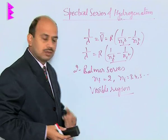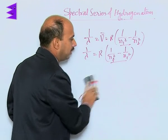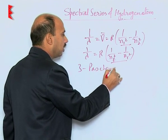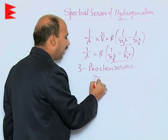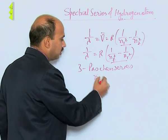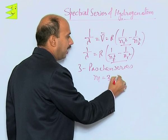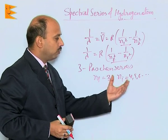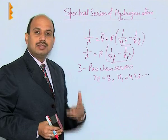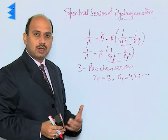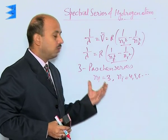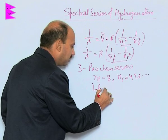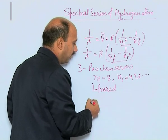The third series is the Paschen series. In the Paschen series, n_f is equal to 3 and n_i is equal to 4, 5, 6, and so on. Electrons are jumping from the fourth, fifth, or sixth orbit to the third orbit. Whatever spectrum or series of wavelengths is obtained is known as the Paschen series. In this case, the spectrum obtained is in the infrared region.